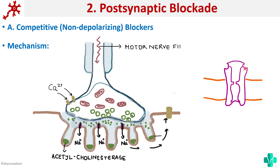In competitive blockers, the drug competes with acetylcholine and binds to the receptor sites where acetylcholine is supposed to bind, so acetylcholine cannot bind to its receptor. The problem is these competitive blockers just bind to the site — they have no biological activity, so they won't cause influx of sodium. There should be influx of sodium to activate voltage-gated sodium channels, but that won't occur. They simply occupy the seat where acetylcholine was supposed to bind, with no biological activity, no sodium entry, and no depolarization. That is why we call them non-depolarizing blockers.